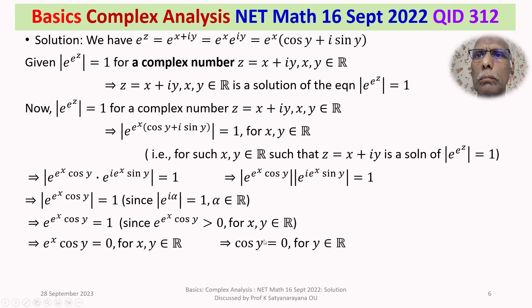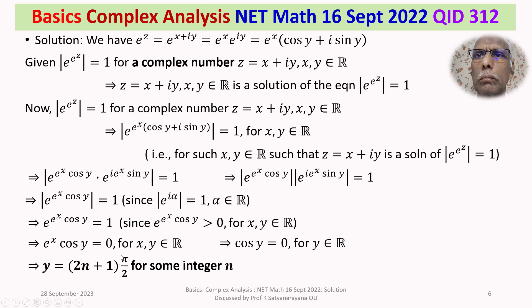cos y = 0 for y ∈ ℝ means there exists an integer n such that y = (2n+1)·π/2 for some integer n, since those are precisely the zeros of cosine.